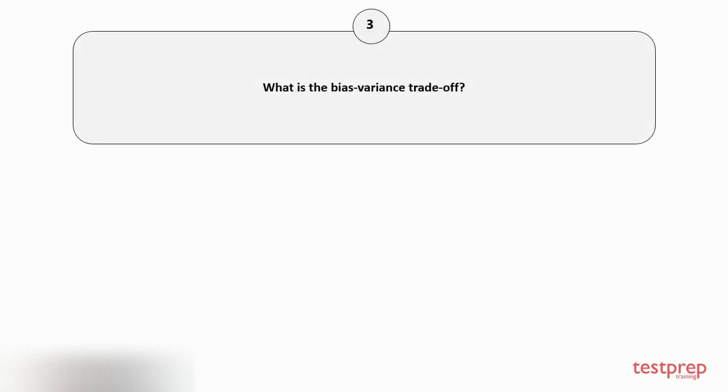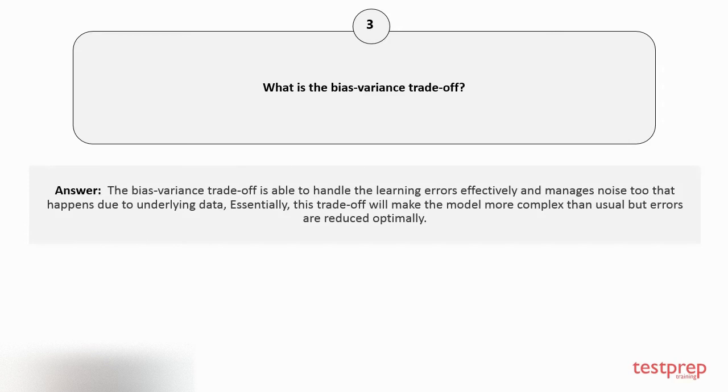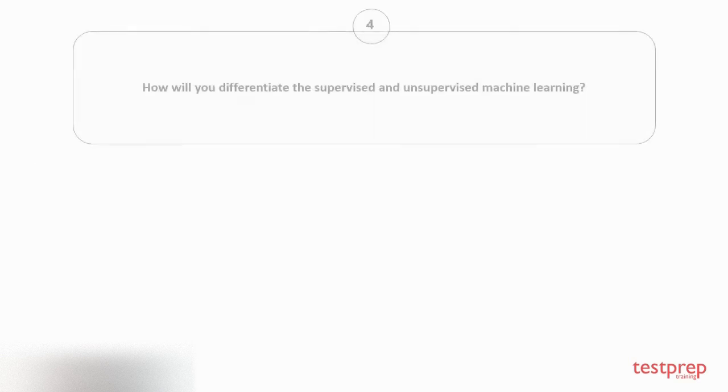Question number three: What is the bias variance trade-off? The bias variance trade-off is able to handle the learning errors effectively and manages noise that happens due to underlying data. Essentially, this trade-off will make the model more complex than usual, but errors are reduced optimally.